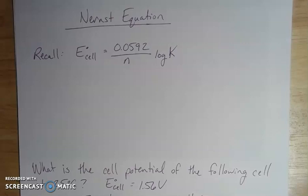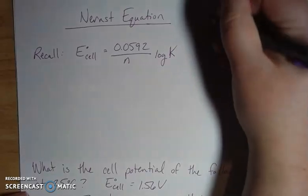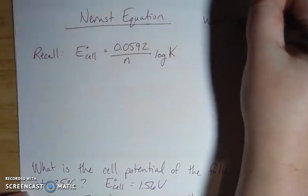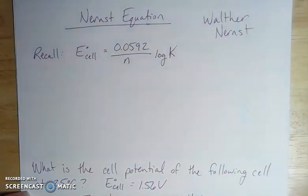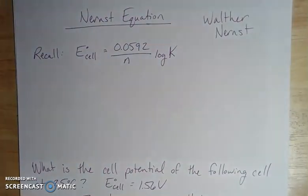One of the important chemists from the 1900s was a guy by the name of Walter Nernst. The Nernst equation is very important in terms of thermodynamics. He was a German scientist that was working on a lot of different things.